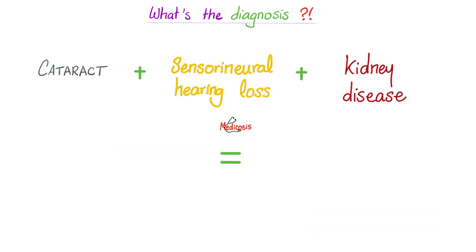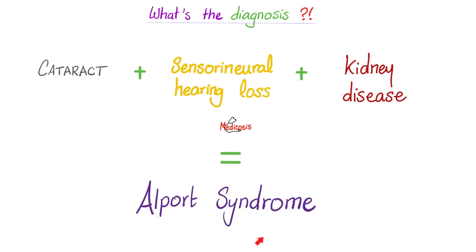Quiz time — I'll ask a question and you identify the genetic disease. A patient has cataract plus sensorineural deafness plus kidney disease. What's the diagnosis? The answer is Alport syndrome: nephritic features, periorbital edema, ear problems, and eye problems.